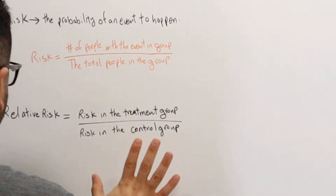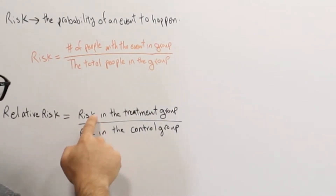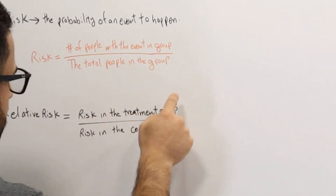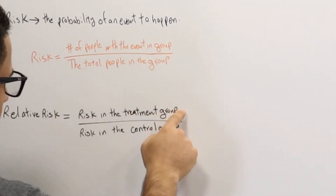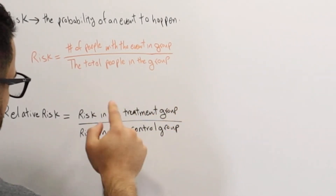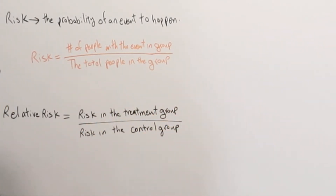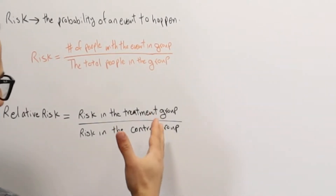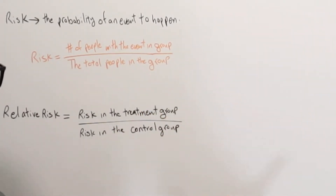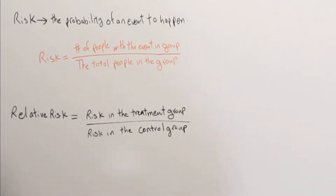I also covered relative risk in the previous lecture, which is the risk in the treatment group over the risk in the control group. We had three conclusions from this: if it's greater than one, if it's equal to one, or if it's less than one.